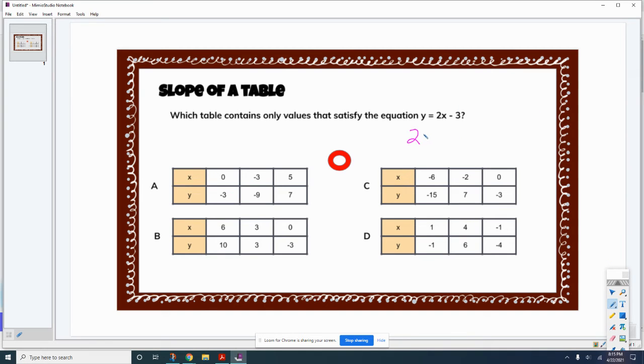So I'm going to do it again. So 2 times whatever x is and here x is negative 3, so that's negative 6 minus 3. Remember, that's a negative and that's a negative, so that's negative 9 and that works.